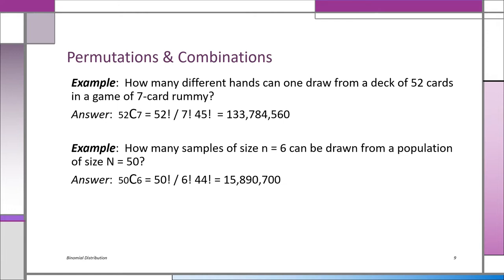The biggest problem you'll have is deciding: is it a permutation or a combination? That's easy to figure out — do we care about the arrangement or not? If we don't care about arrangement, and ABC is the same as BCA, then you're basically looking at a combination.